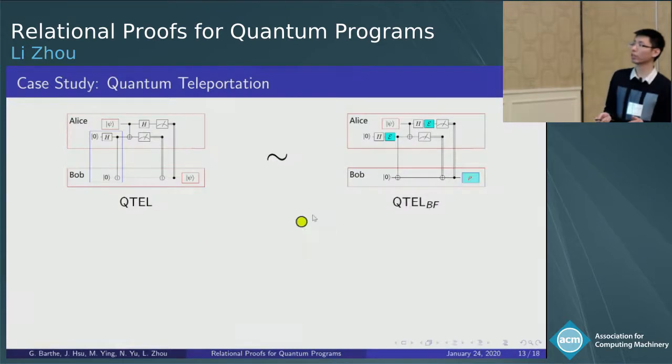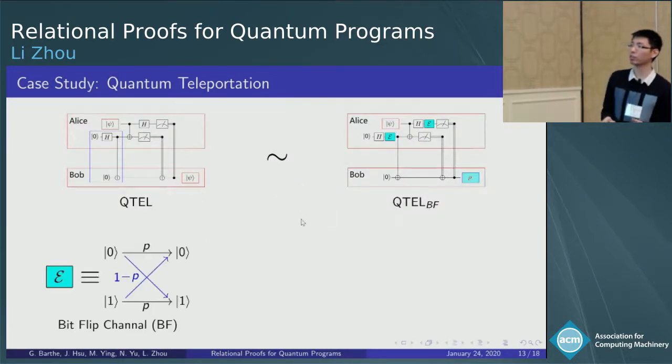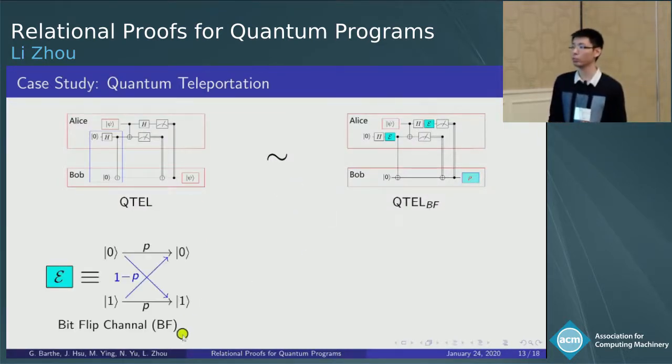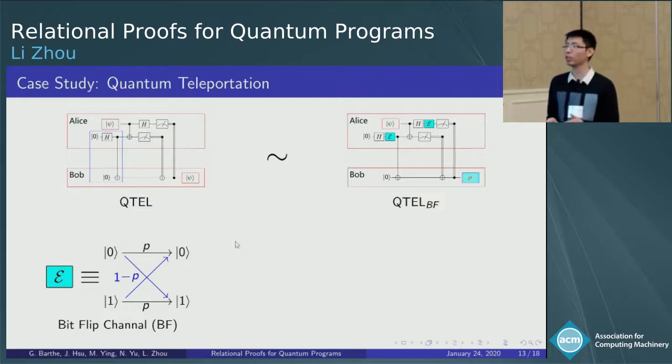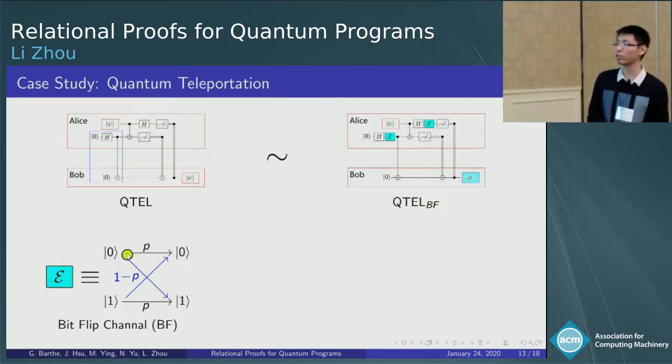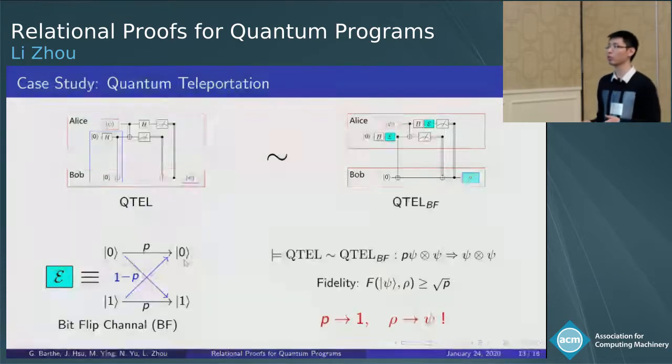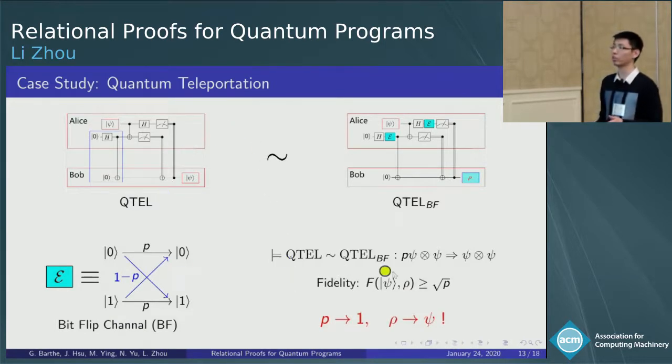We can relate them like this, and if the quantum noise is a bit-flip channel, that is, the quantum state is unchanged with probability P, and with the probability 1 minus P, the state 0 changes to 1, and 1 changes to 0. And we can use our logic to verify this judgment. It says that the fidelity between rho and Psi is larger or equal than the square root of P.